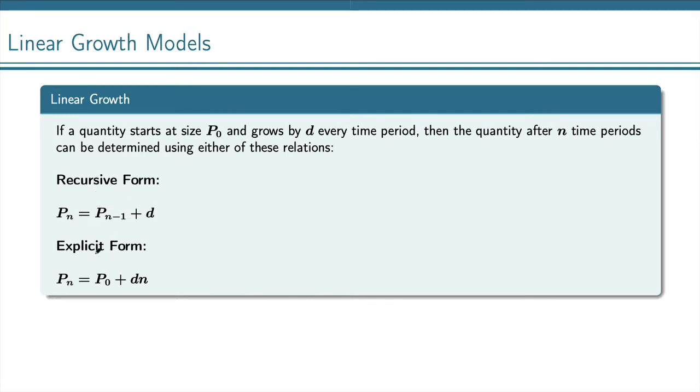Instead of the recursive formula, we can use an explicit form. That's where we just use the initial amount, and then we can find out how much we have after n time periods by just taking that constant difference D, which was 32 in the case of Marco, and multiply by the number of time periods. So these are the two forms that we should be familiar with, the explicit form here and the recursive form here.